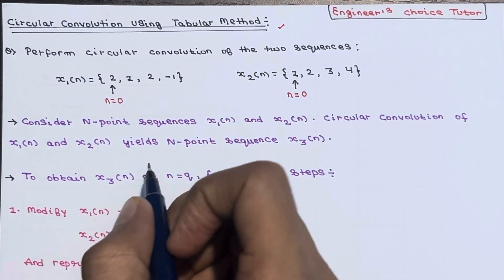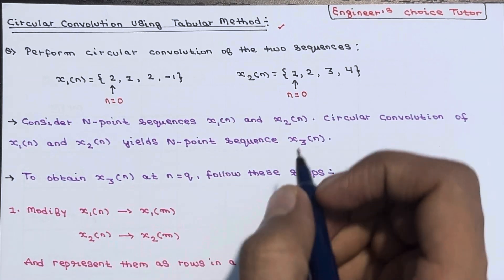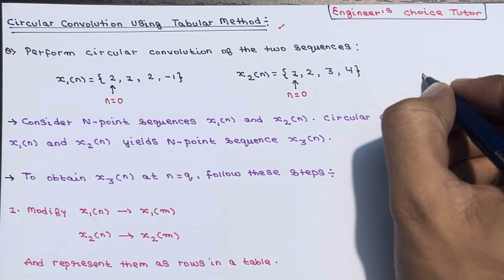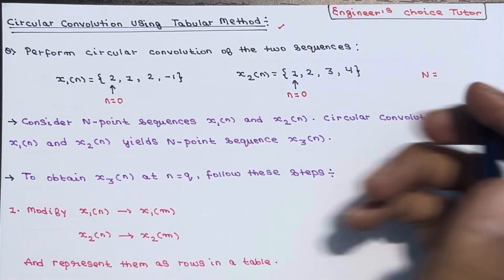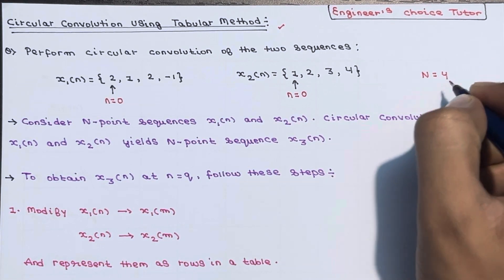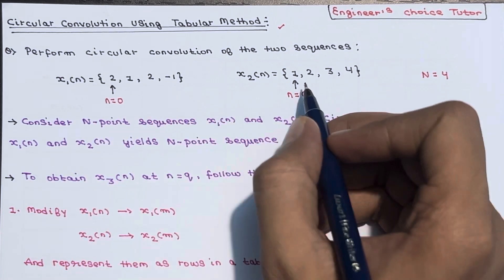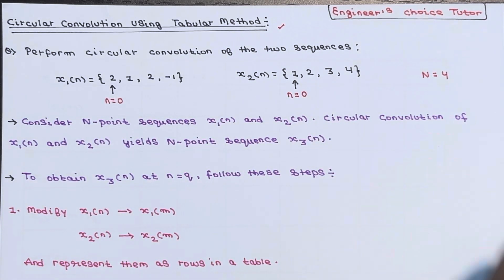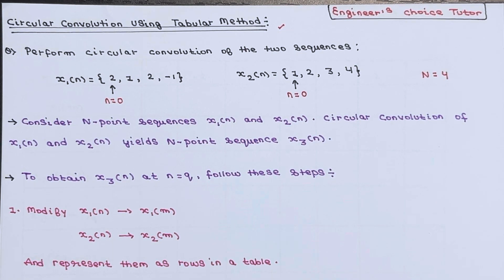The circular convolution of x1(n) and x2(n) yields an N-point sequence x3(n). Here, both sequences have 4 samples, so N=4. The final sequence, which is the circular convolution of these two sequences, will also be a 4-point sequence. The value of N is 4 and the signals are periodic in nature.